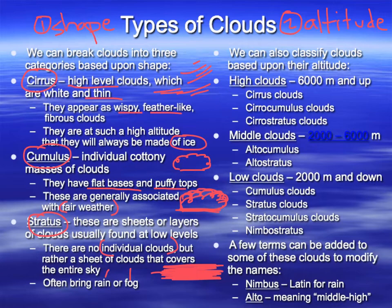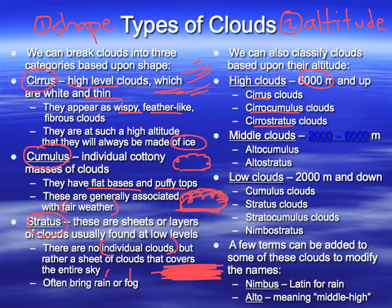High level clouds are going to be 6,000 meters and up — about 20,000 feet and up — very very cold. You can have general cirrus clouds, a mix called cirrocumulus clouds, and a mix called cirrostratus clouds. Those are all high level clouds.